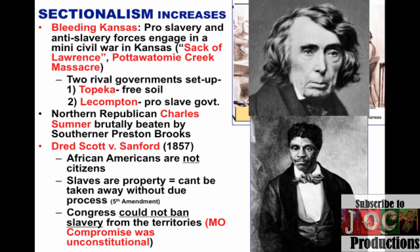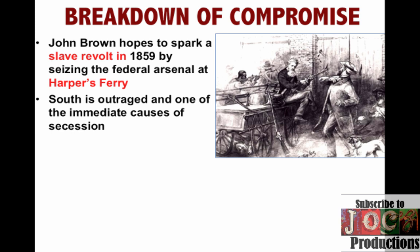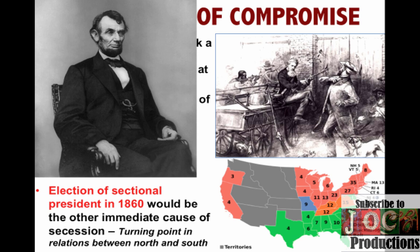Over and over again, you see the breakdown of compromise. In 1859, another crisis hit the Union when John Brown — the man from Pottawatomie Creek — hoped to spark a slave revolt in Virginia by seizing the federal arsenal at Harpers Ferry. He ultimately failed and was hanged, but the South was outraged. It became one of the immediate causes of secession because Southerners felt the North was supporting John Brown. The key moment came in 1860 when Lincoln, not winning a single state in the South, was elected president. For Southerners, he was seen as a sectional president, and this compelled seven states to leave the Union before he even took office.